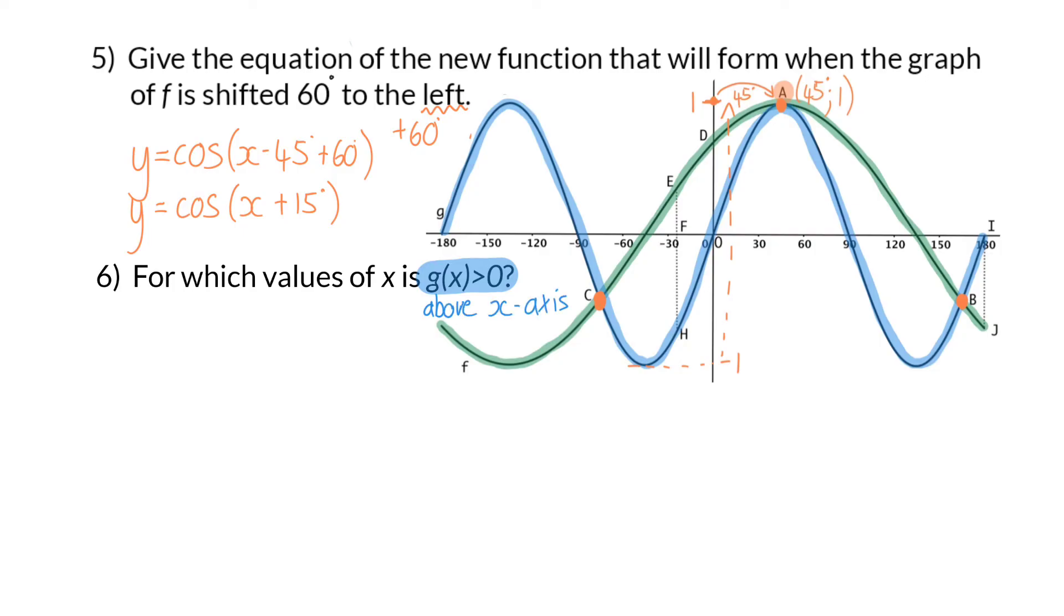So, if we identify the parts of the blue graph that are above the x-axis, you will find two parts. The first part can be described as all the x values between minus 180 and minus 90 degrees, with minus 180 and minus 90 not included, because g(x) cannot be equal to 0. The second part is the interval for all x's between 0 and 90 degrees, and once again, 0 and 90 degrees are excluded.